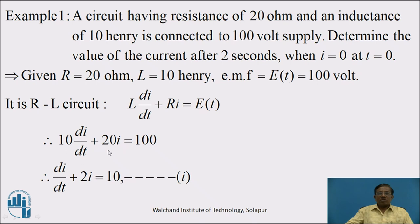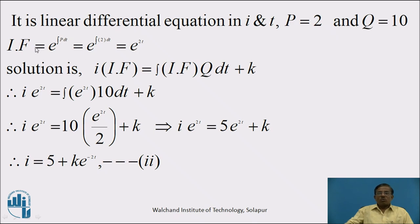Dividing both sides by 10, we get: dI/dt + 2I = 10. Denote this as equation (1). This is a linear differential equation of the type dY/dx + PY = Q, where P = 2 and Q = 10. To solve, we first find the integrating factor: IF = e^(∫P dt) = e^(∫2 dt) = e^(2T). Therefore, the integrating factor is e^(2T).